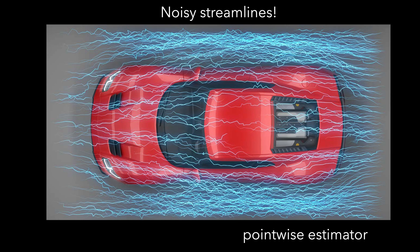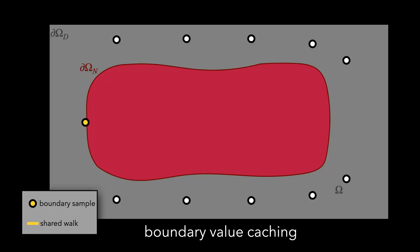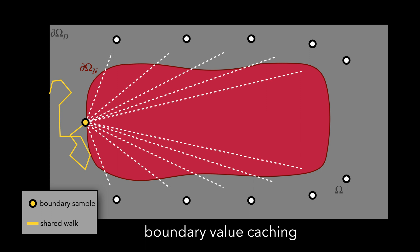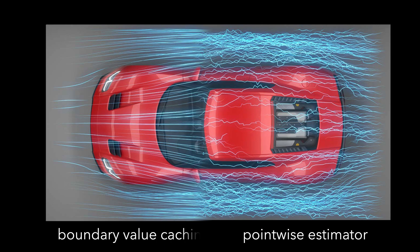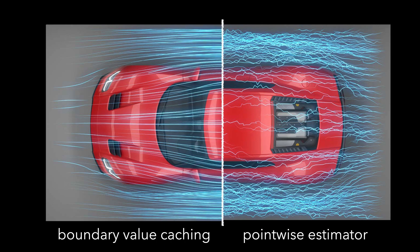To overcome these challenges, our boundary value caching method instead takes walks only from the boundary and reuses the estimates from these walks over the entire domain. In our wind tunnel example, this results in significantly smoother streamlines.